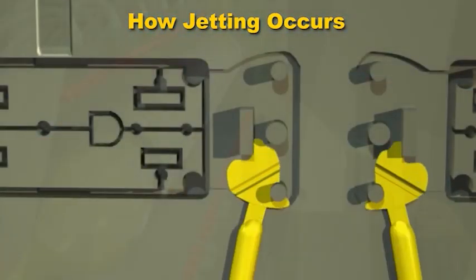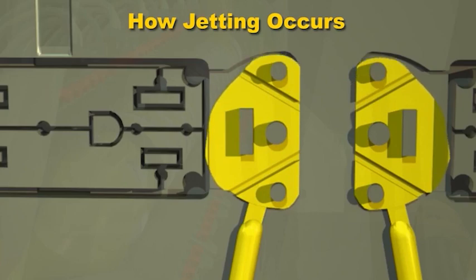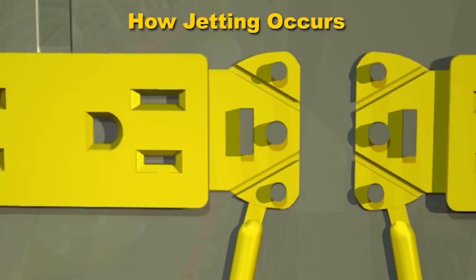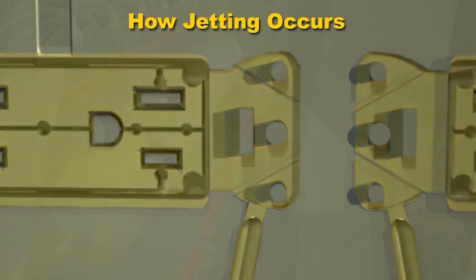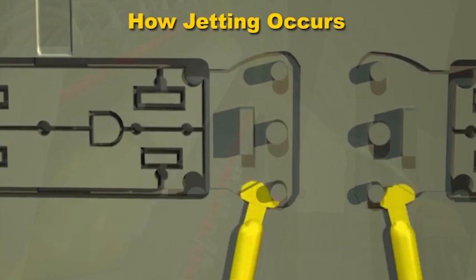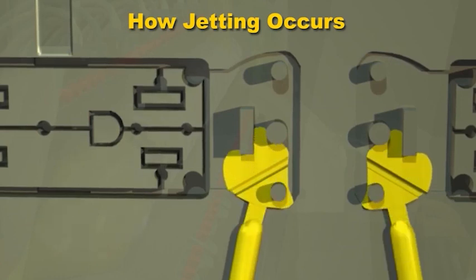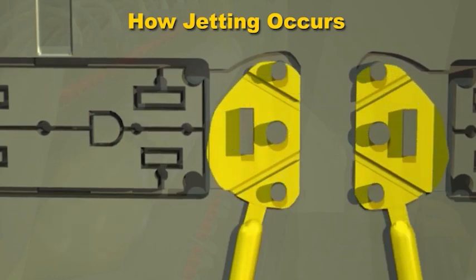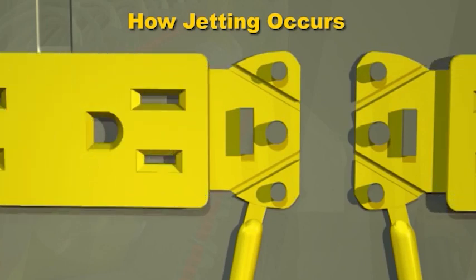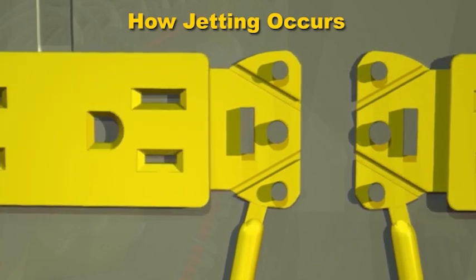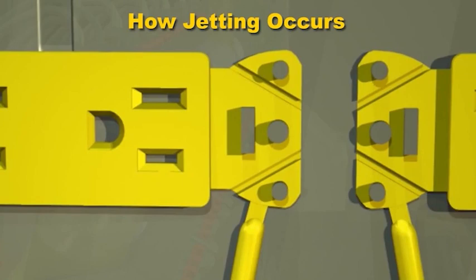What should happen during the start of filling is a flow front must form as soon as the plastic enters the cavity so a jet can't occur. Or, if a jet starts, the first plastic entering the cavity must immediately hit some obstruction in the mold, such as a pin or a rib.